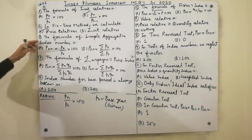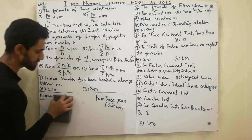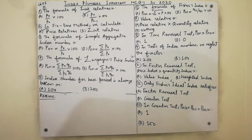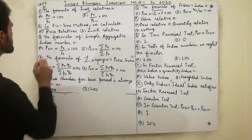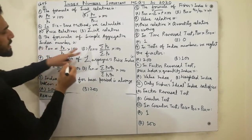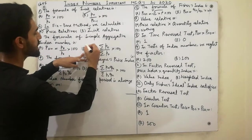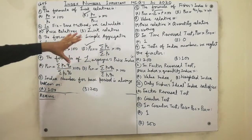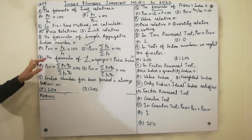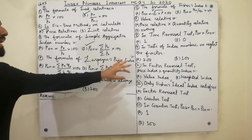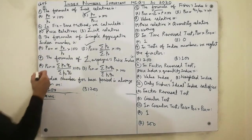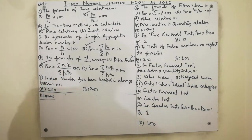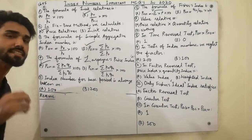Third MCQ: the formula of simple aggregative index number is very very simple. The formula of simple aggregative index number is P-naught-N equal to sigma PN divided by sigma P-naught, multiplied by 100. I am telling you a secret and trick about this formula.